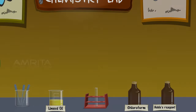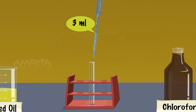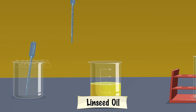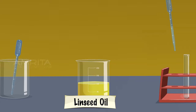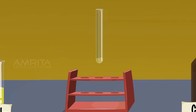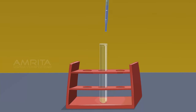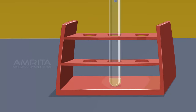Linseed Oil. Using a dropper, take about 3 ml of chloroform in a test tube. Using another dropper, take a small quantity of linseed oil and add about 4 drops into the test tube. Shake the test tube well. Add about 3 drops of Hübl's reagent into the test tube containing the mixture of chloroform and linseed oil. The violet colour of iodine in the Hübl's reagent fades away, indicating that linseed oil is more unsaturated.